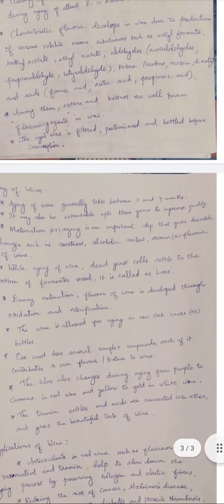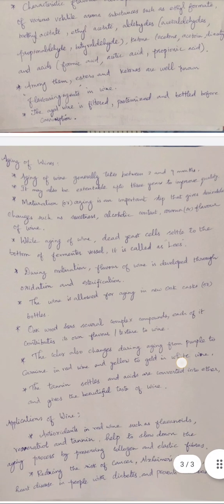After aging, the aged wine is filtered and then pasteurized to kill all spoilage microorganisms and potential pathogens. It is then bottled before consumption.